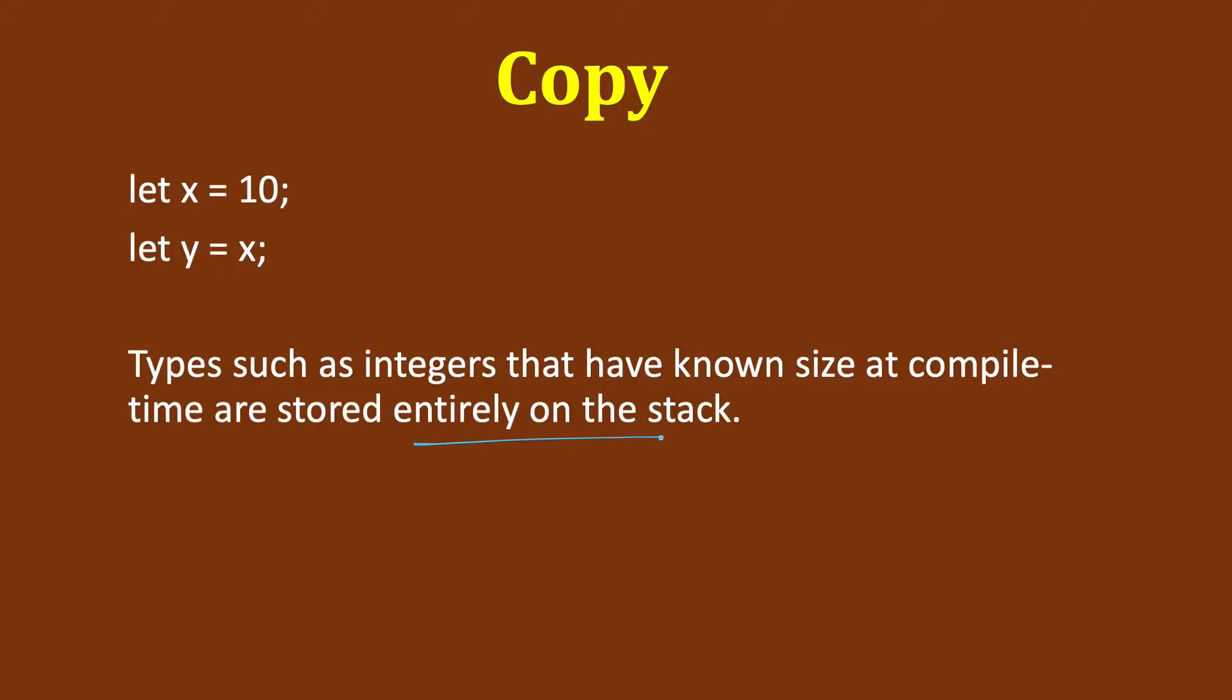Rust won't let us annotate a type with copy trait if the type or any of its part has implemented the drop trait. Earlier we had seen that if we have a variable here, like we had seen the example of string s1 was string hello.